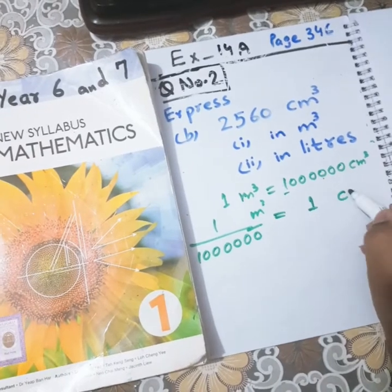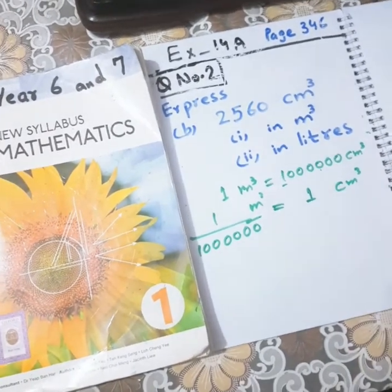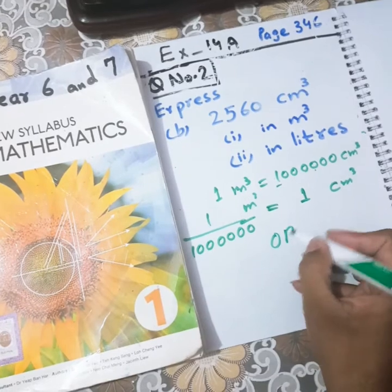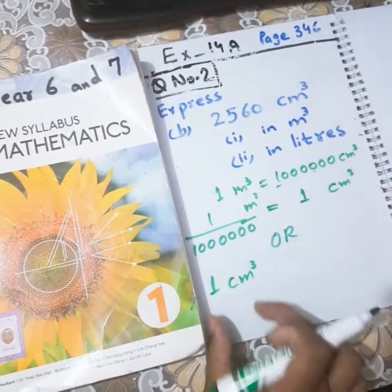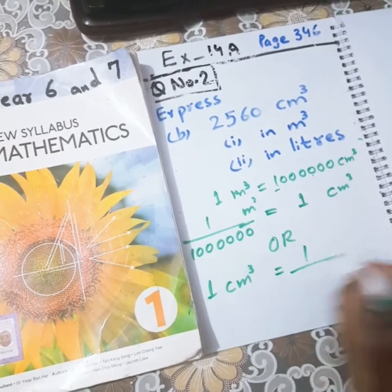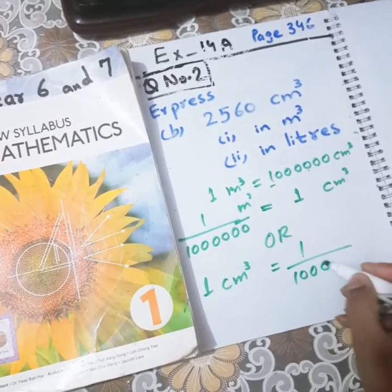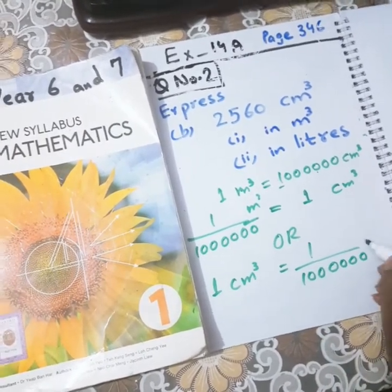This side is m³ and this side is cm³, or we can also write 1 cm³ is equal to 1 over 1,000,000 m³.